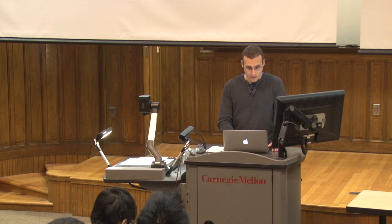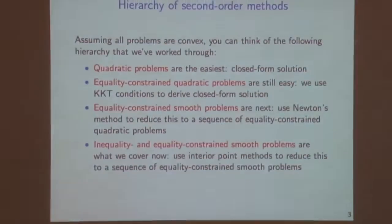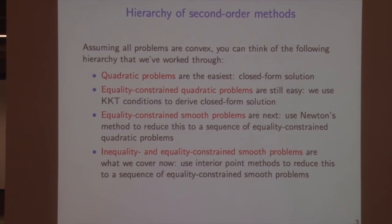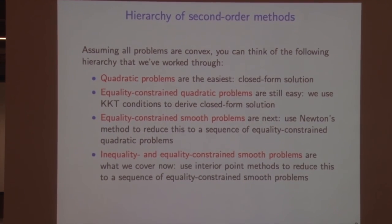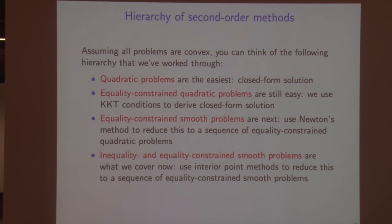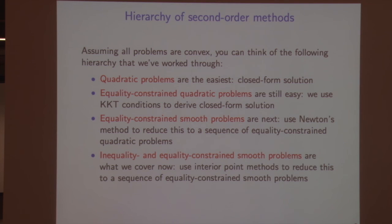Before discussing the barrier method, here's a high-level hierarchy of second-order methods. Unconstrained quadratic problems are easiest — we have a closed-form solution from taking the gradient and setting it to zero. Equality-constrained quadratic problems are next; we use KKT conditions to solve them in closed form by enlarging the quadratic system. Smooth problems with equality constraints are solved with Newton's method, which turns them into a sequence of equality-constrained quadratic problems. At each step we take a quadratic approximation and solve an inner problem in closed form.